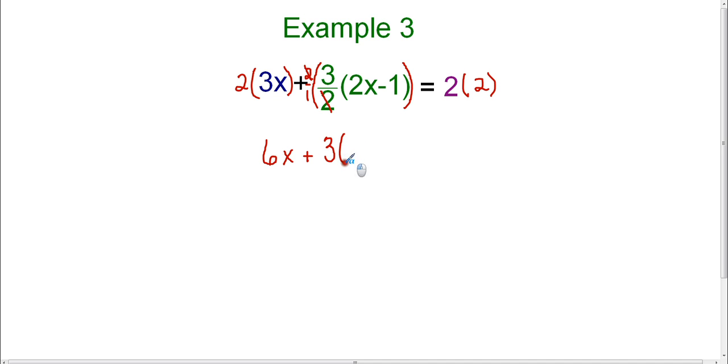So I'm left with 3 times the quantity 2x minus 1. And then on the right-hand side of the equation, 2 times 2 is 4. So I've been able to eliminate the fraction, and now I'm down to a pretty simple equation.